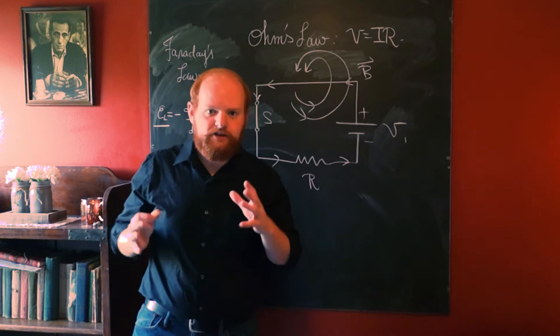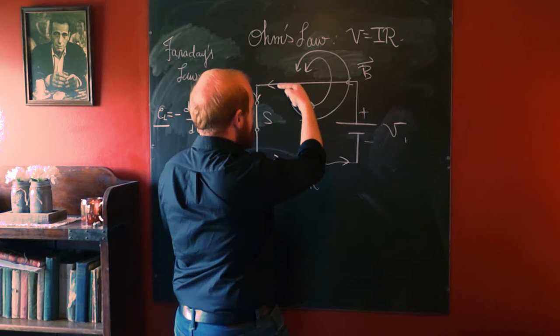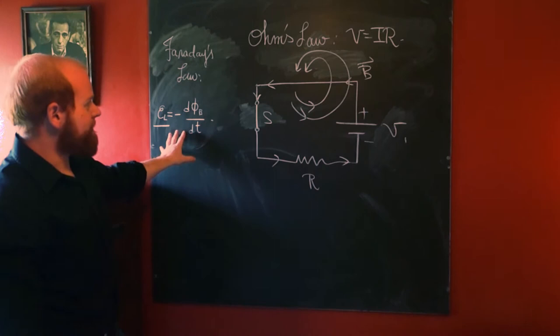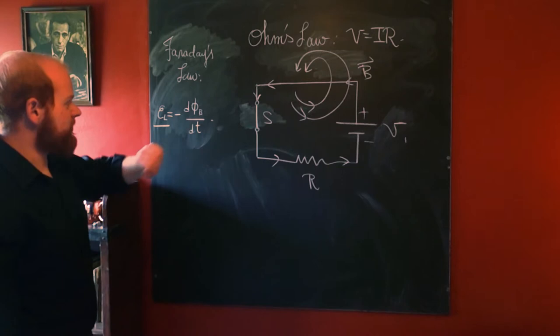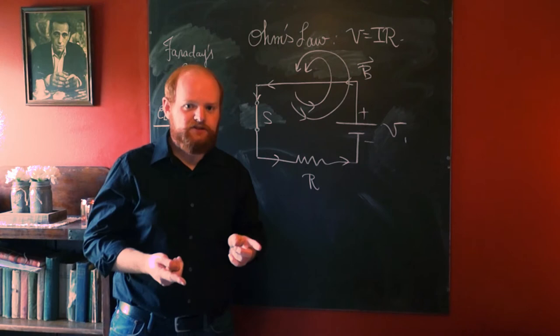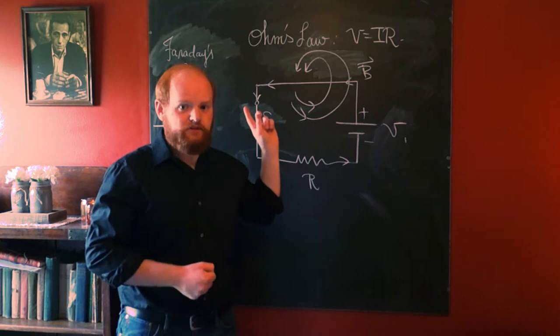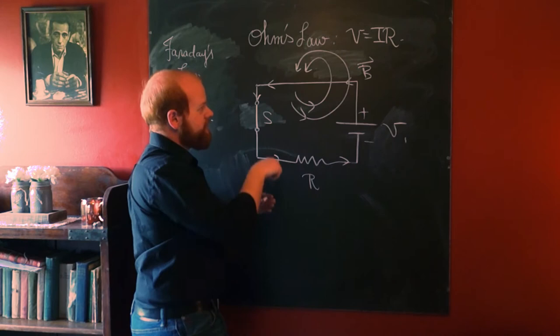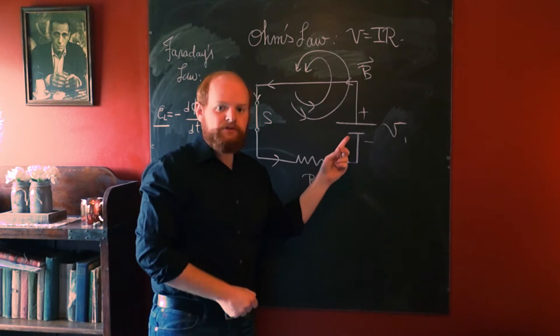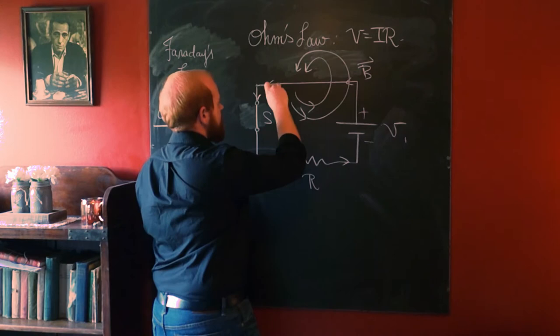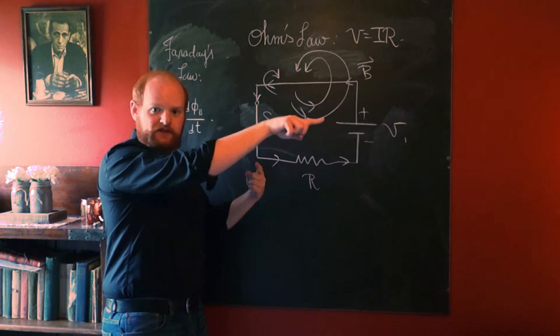Let's go through it again: current from the battery creates a magnetic field swirling around the loop. By Faraday's law, that induces ε_L in the wire, and by Lenz's law, ε_L goes in a direction such that the B field it creates subtracts from the original change in flux. Since the B field is growing, dΦ/dt points in the same direction as B, so the induced current must flow opposite to the original current.